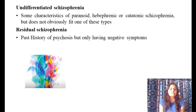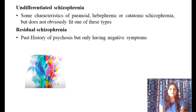Undifferentiated schizophrenia is when the patient has characteristics of paranoid, hebephrenic, and catatonic types but does not fit neatly into any one category. Residual schizophrenia refers to a past history of psychosis with some persisting negative symptoms after recovery from the acute episode.